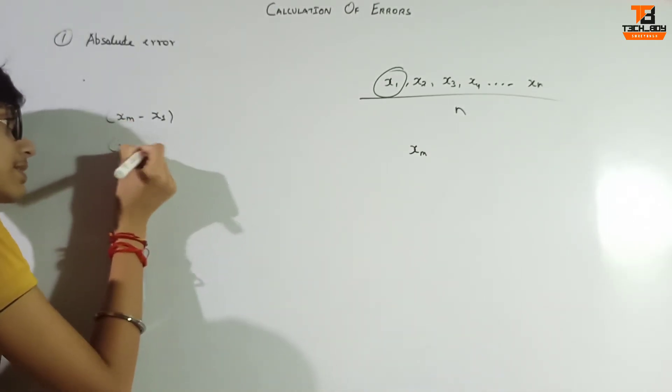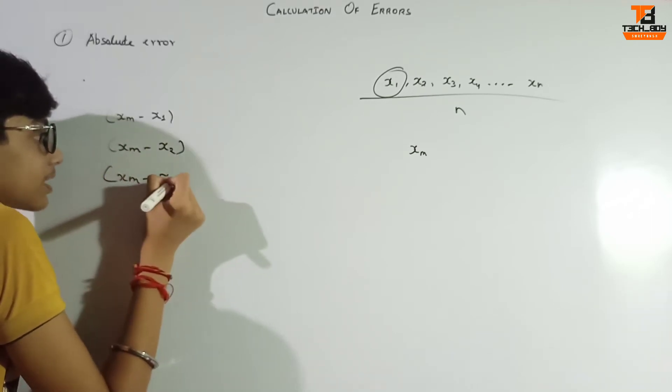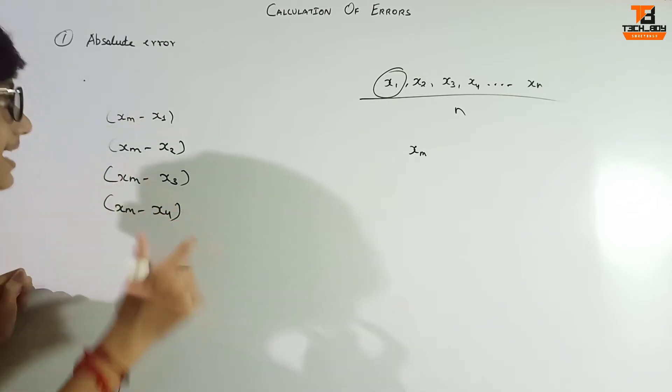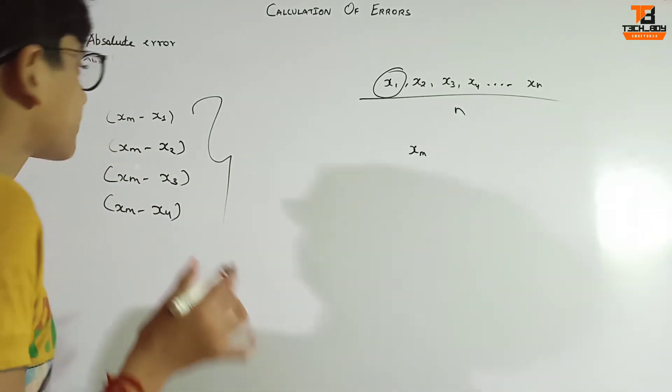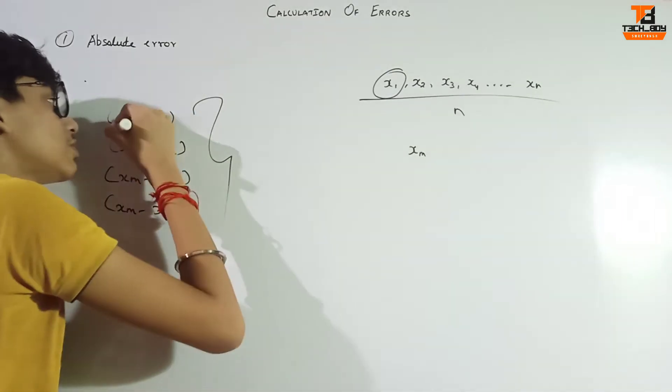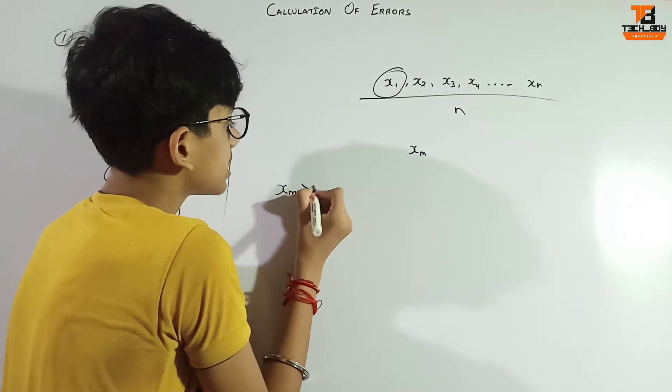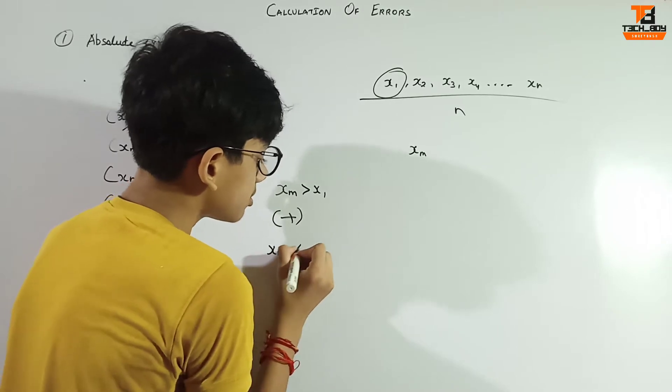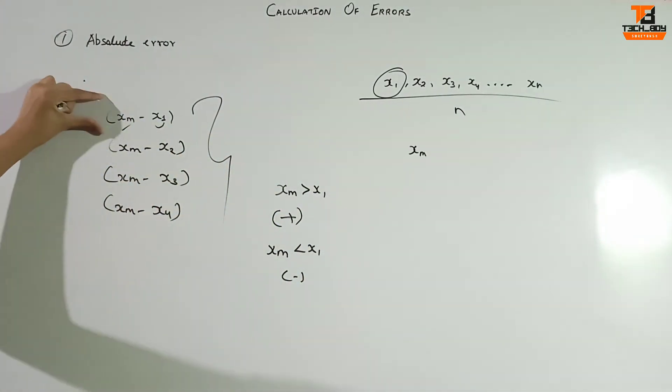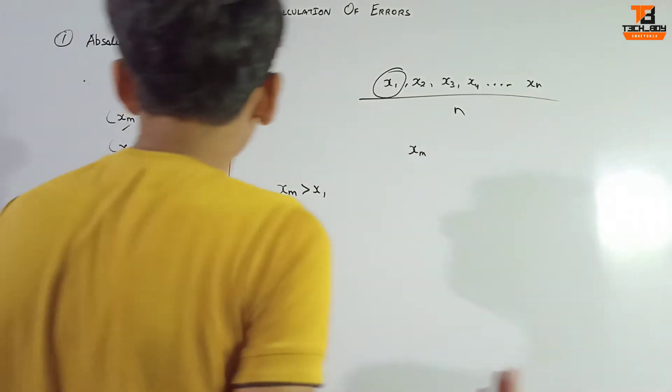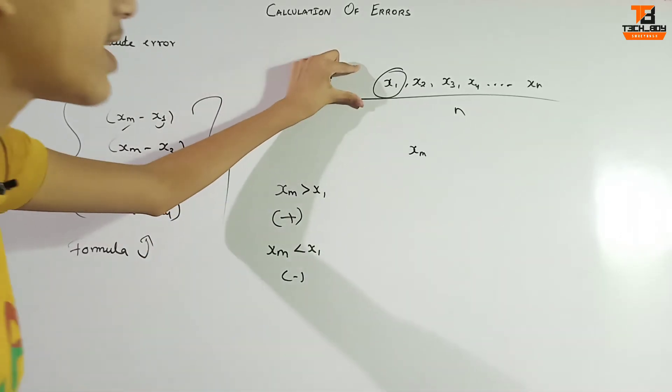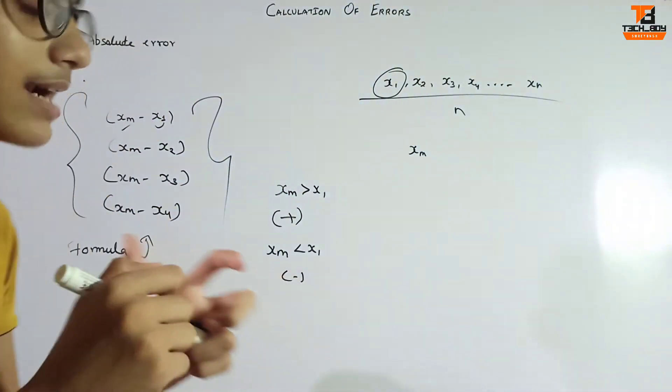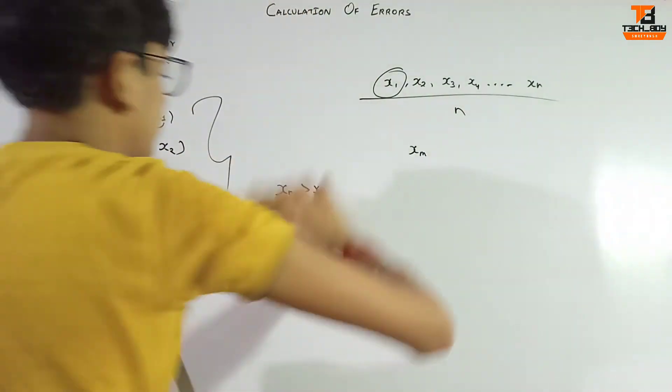Xm minus x1, xm minus x2, xm minus x3, xm minus x4, just like that. We have to remove true value and remove all observations. That's it. Now the next one, we have to show this.